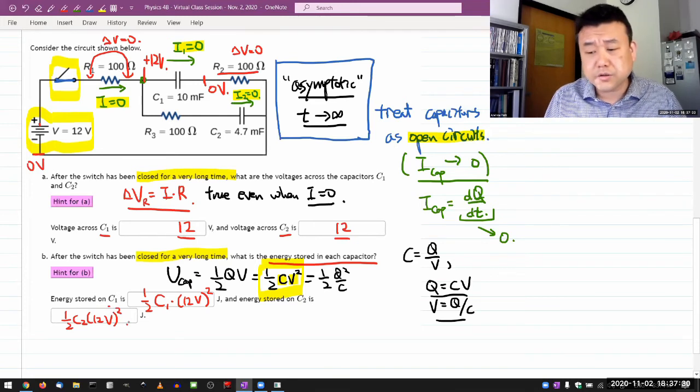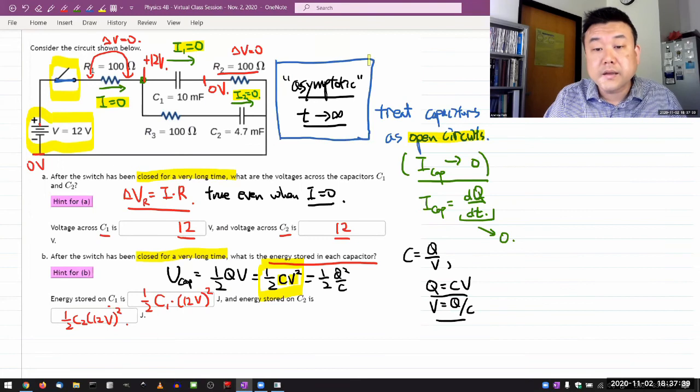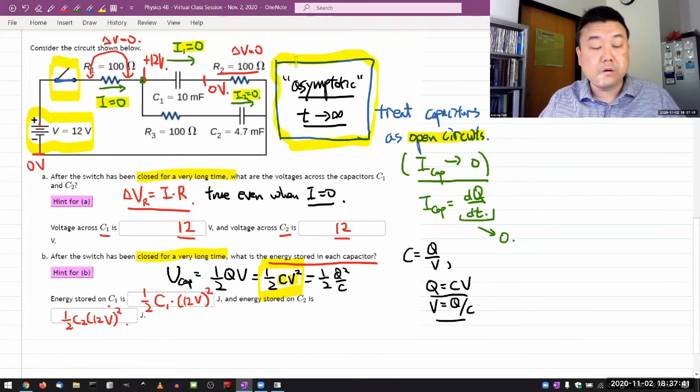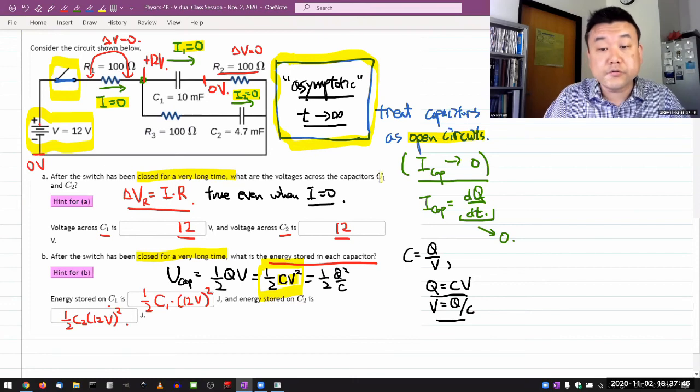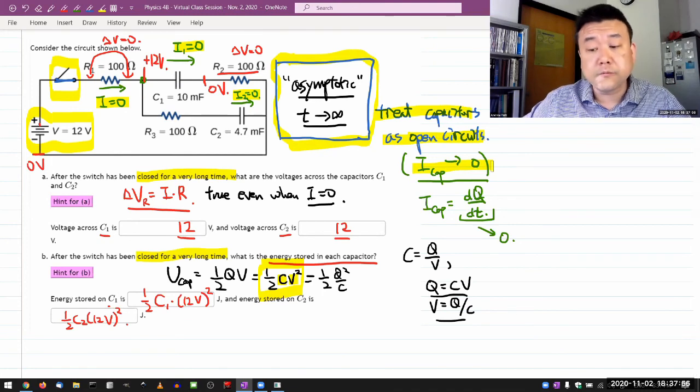This question looks more complicated than it actually is. But it is important that you know how to handle these asymptotic cases. After a circuit reaches steady state, you have to know to treat capacitors as open circuits, meaning current through the capacitor is zero. That constraint forces other simplifications in the circuit that will hopefully help you solve the circuit.